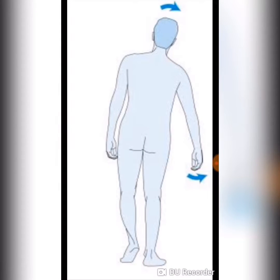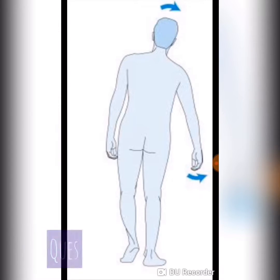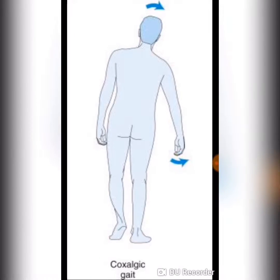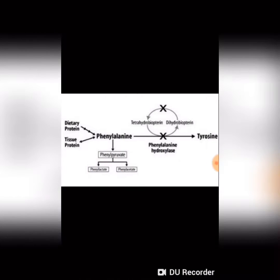Next question: in this image, which gait is seen? Coxalgic gait is depicted in this picture.